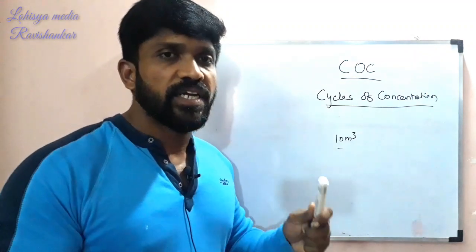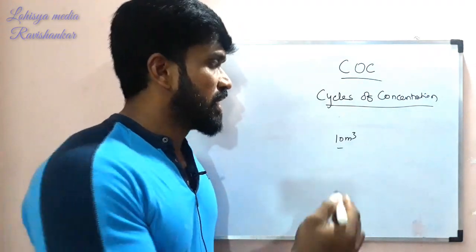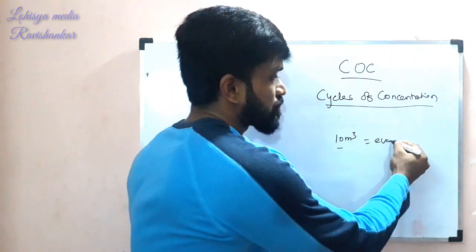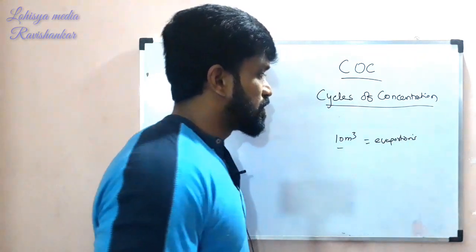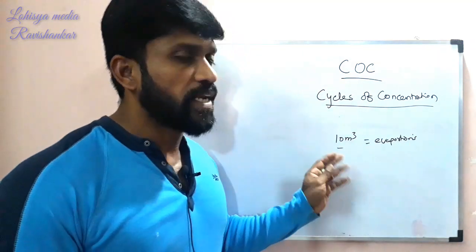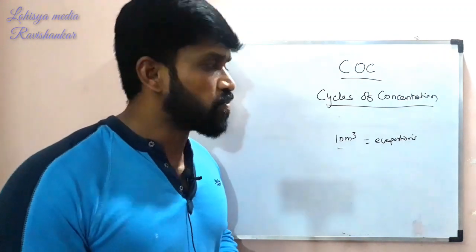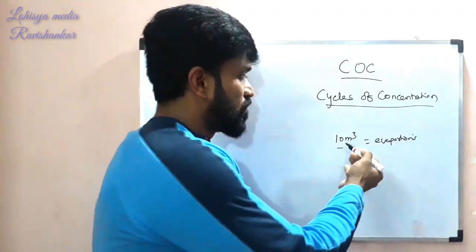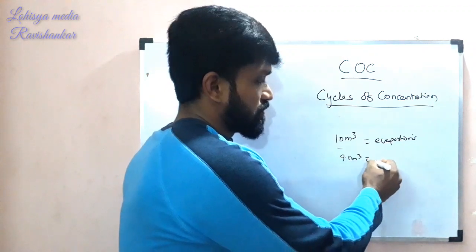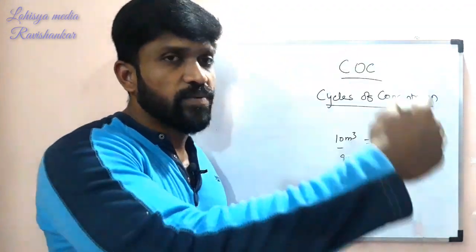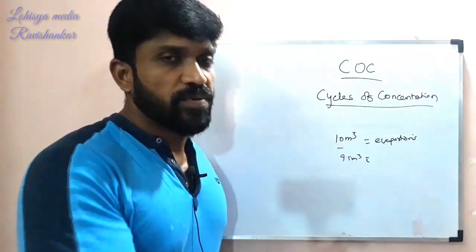If you circulate this water, the evaporation process begins. Taking the 10-cubic-meter volume, the heat causes evaporation. After one cycle, you are left with 9.5 cubic meters.